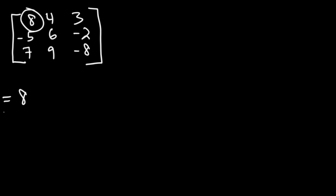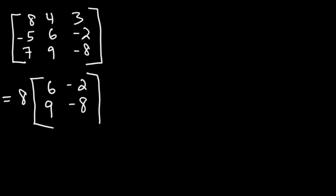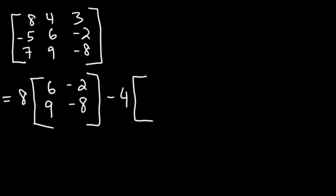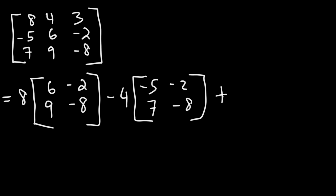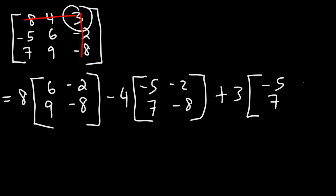Let's begin by writing the first element in the first row, which is 8. And if we take out the first row and first column, we're going to have the numbers 6, 9, negative 2, negative 8. Now, minus the second element in the first row, which is 4. If we take out the 4, which is in first row, second column, we're going to have the numbers negative 5, 7, negative 2, negative 8. And then plus the last element in the first row, which is 3 — in the first row, third column — leaving behind the numbers negative 5, 7, 6, and 9.